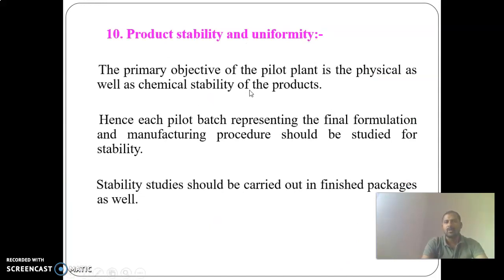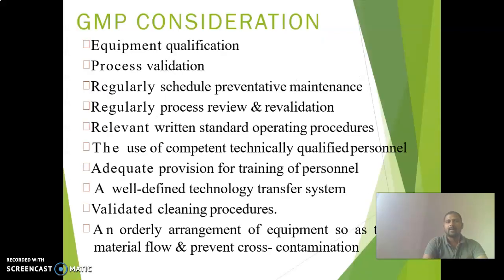Product stability and uniformity: the primary objective of the pilot plant includes ensuring physical and chemical stability of the product. Each pilot batch representing the final formulation and manufacturing procedure should be studied for stability, and stability studies should be carried out in finished packaging. GMP considerations include: equipment qualification, process validation, regulatory schedule, preventive maintenance, regulatory process review, revalidation, and relevant standard operating procedures.